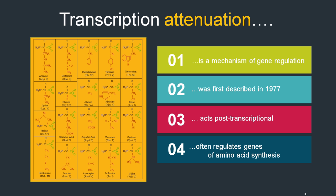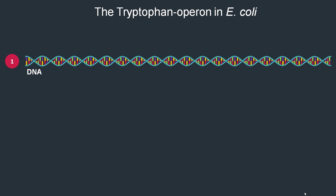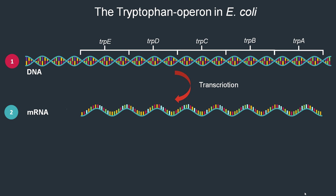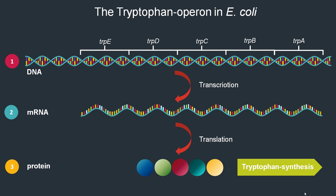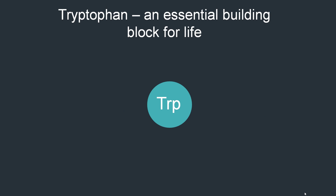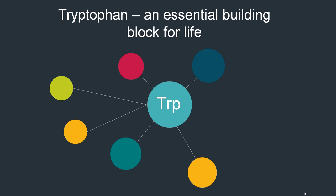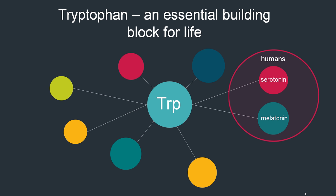Attenuation is not only restricted to tryptophan biosynthesis. These attenuators can be found in front of different operons, but mostly they regulate genes of amino acid synthesis. The tryptophan operon in E. coli consists of five genes, the so-called trp genes — trpE, D, C, B, and A. These genes are transcribed into mRNA and translated into five proteins responsible for tryptophan synthesis. Tryptophan is an essential amino acid for all life on this planet, playing a key role in protein structure, and in humans it's used to produce serotonin and melatonin.